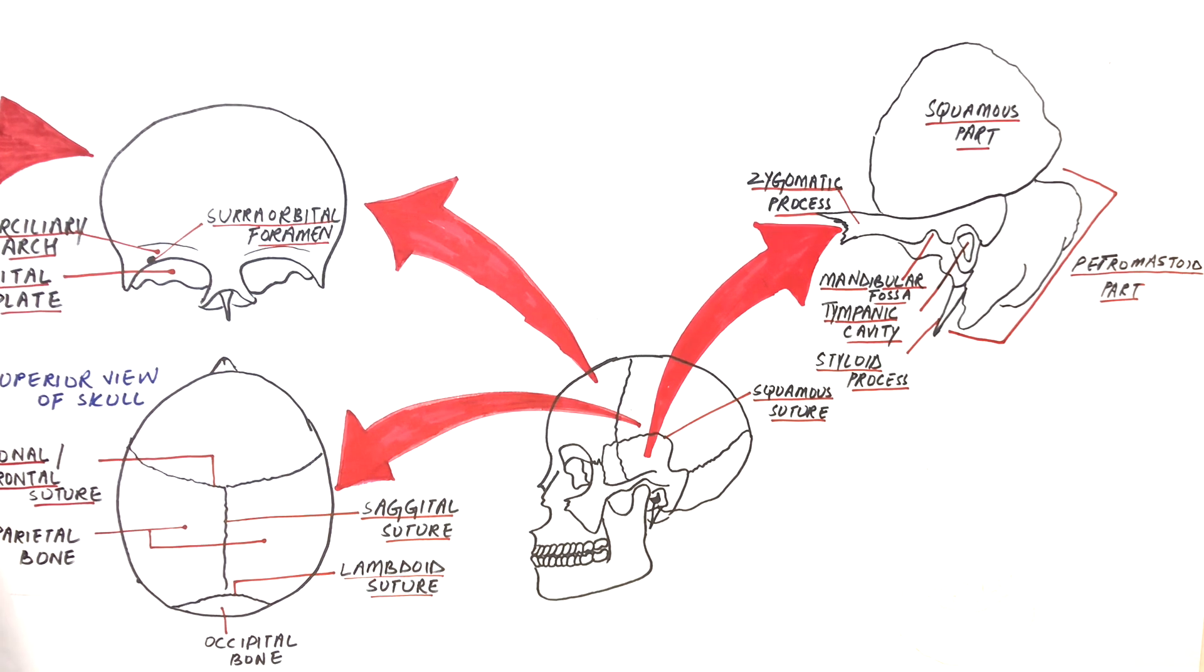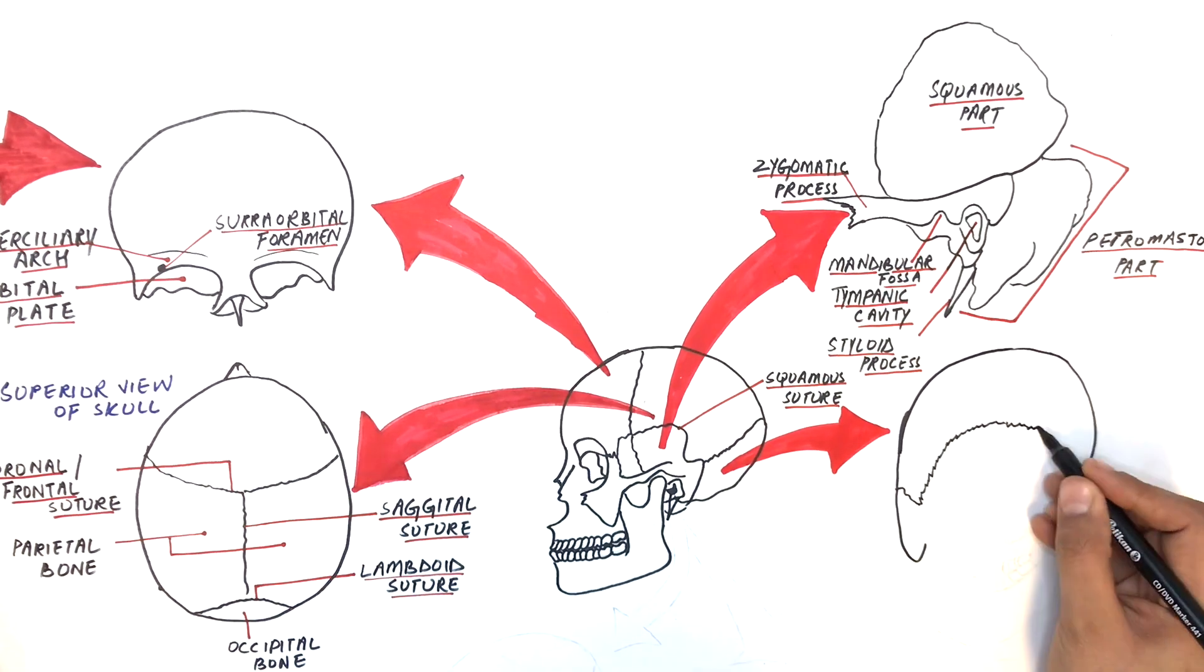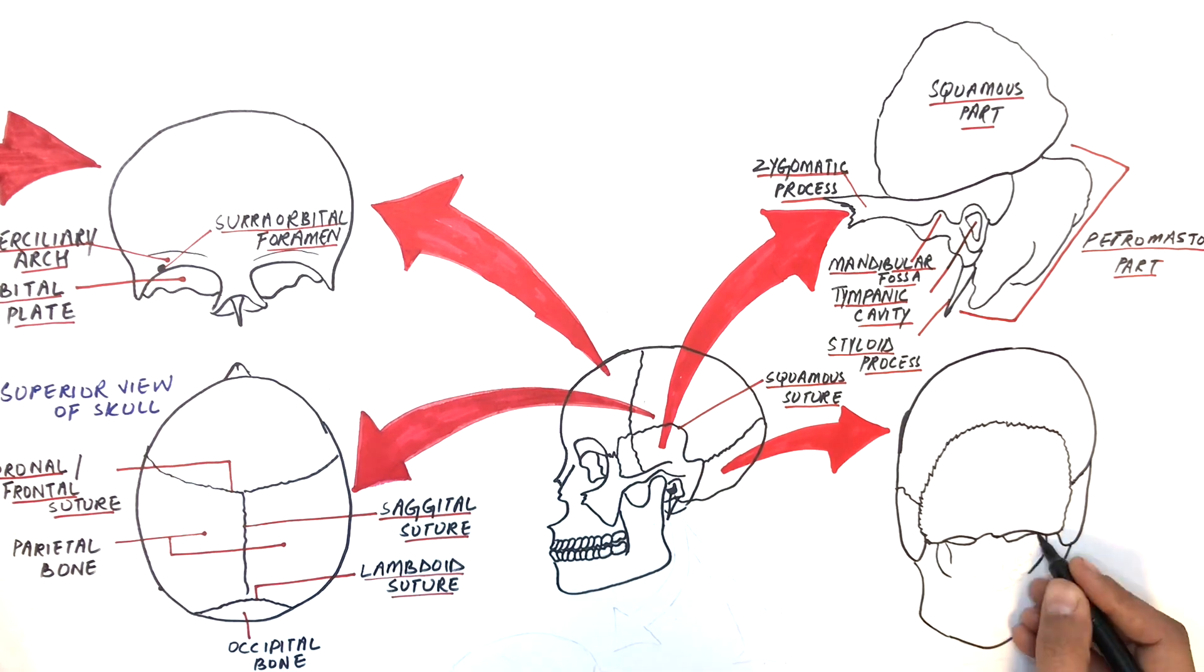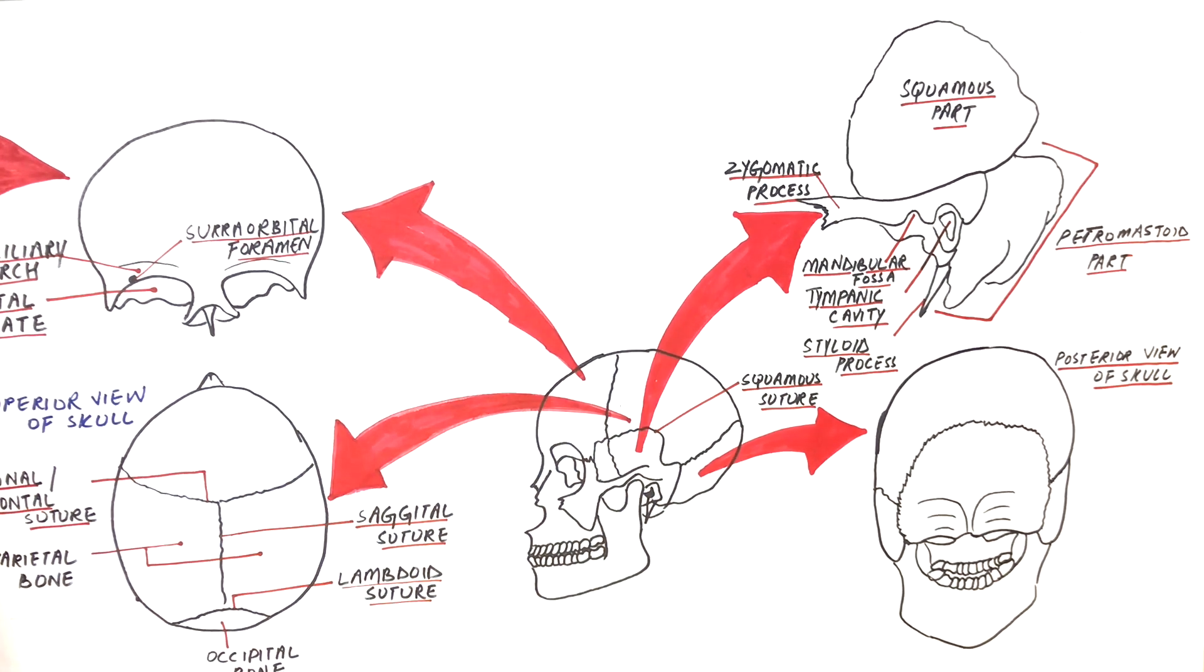The next bone we have is the occipital bone, seen from this posterior view of the skull. In Latin, occipital means back, in that this bone is the most posterior bone of the skull.